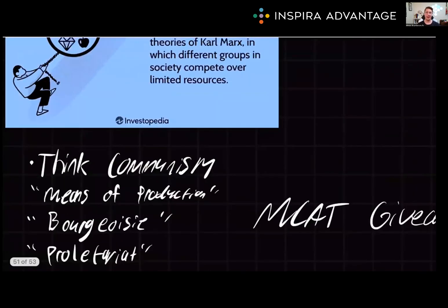Conflict theory goes hand in hand with conflict sociology. Conflict sociology is the study of the way that distinct groups compete for resources, examining how power dynamics shape society — such as the struggle between workers and employers, or proletariat and bourgeoisie, over wages and working conditions.